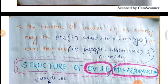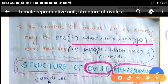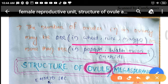The number of ovules in an ovary may be one or more than one. Plants with a single ovule include wheat, rice, and mango. Plants with more than one ovule — called multi-seeded plants — include papaya, watermelon, and orchids.